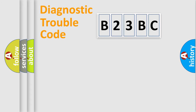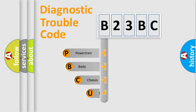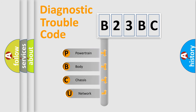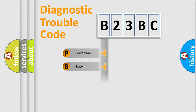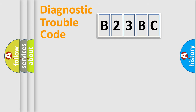First, let's look at the history of diagnostic fault code composition according to the OBD2 protocol, which is unified for all automakers since 2000. We divide the electric system of an automobile into four basic units: Powertrain, Body, Chassis, and Network.